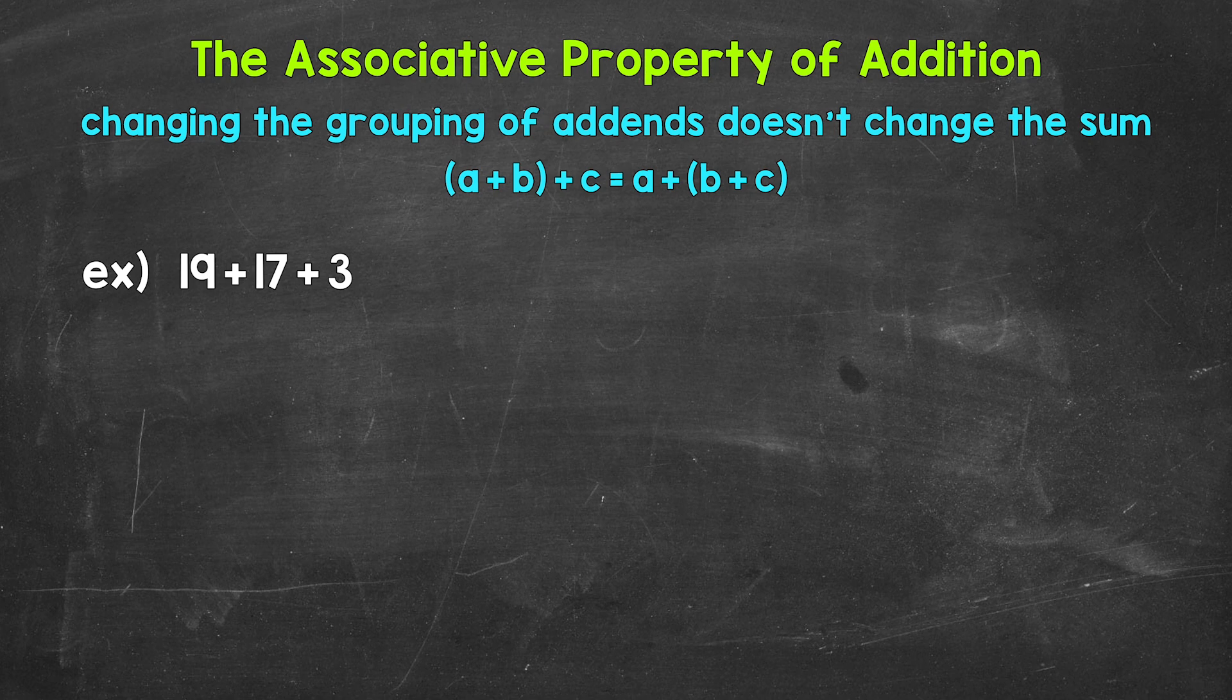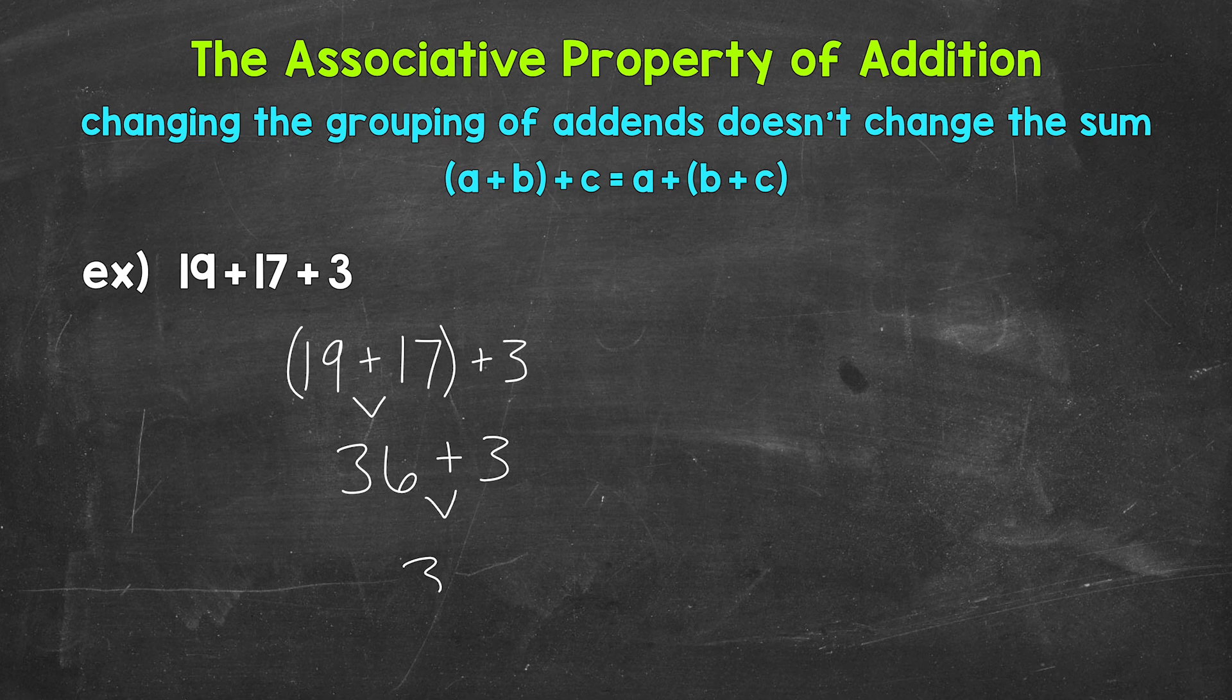Let's start by grouping 19 and 17 and work through this. So, (19+17)+3. Now we can add, starting with the parentheses. We have 19+17, that equals 36. Bring down the addition sign and the 3. We end with 36+3, which equals 39.